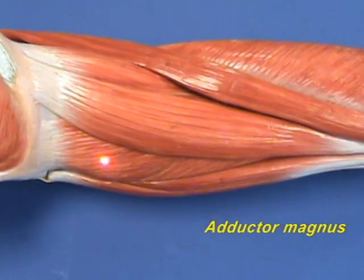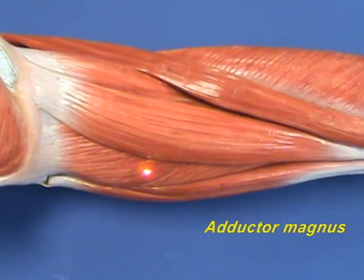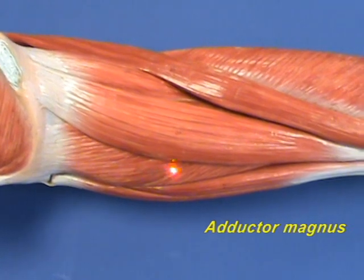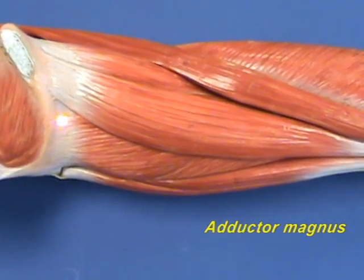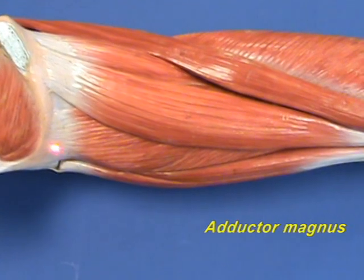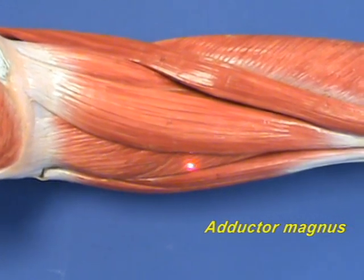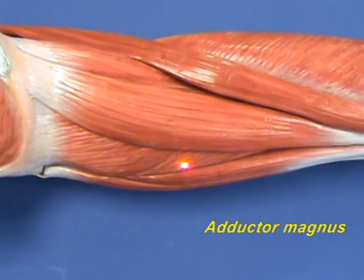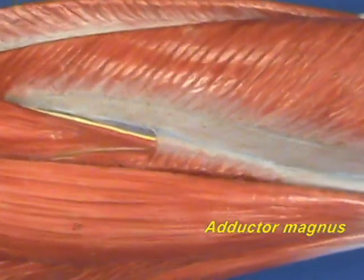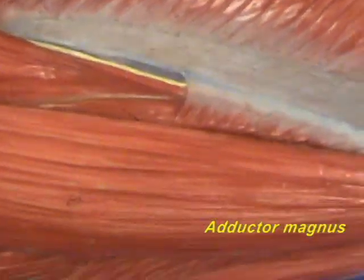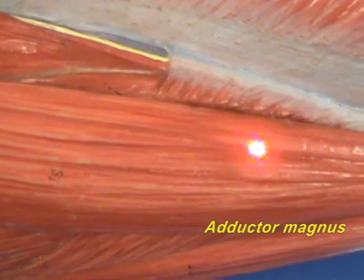The adductor magnus muscle is the largest and the deepest muscle of the medial compartment, but in this model you can't see very much of the muscle. It has an origin on the pubic and ischial bones, going back to the ischial tuberosity. This portion looks like a separate muscle, but it is also part of the adductor magnus. If we remove the sartorius muscle, you can also see a little bit of the adductor magnus muscle right underneath the gracilis muscle.